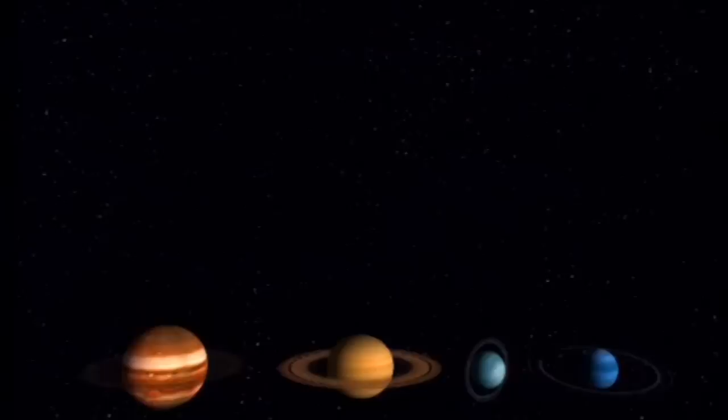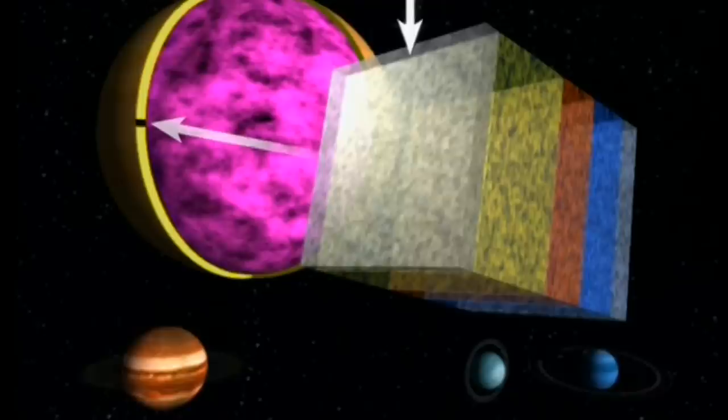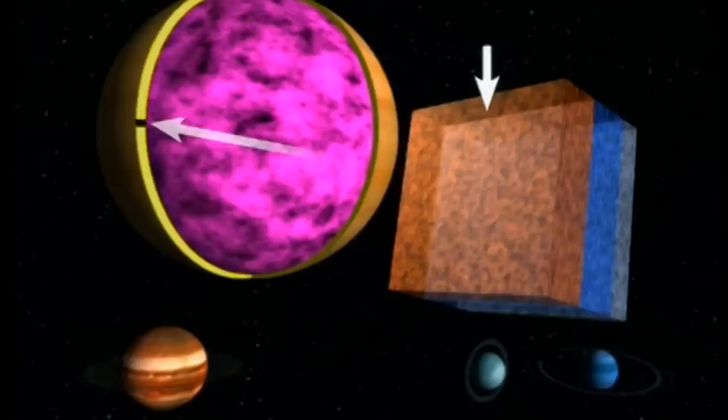L'atmosphère de Saturne se divise en cinq couches. La plus élevée d'entre elles est composée de brouillard. En dessous, des cristaux de glace ammoniaqué, puis de l'hydrosulfine d'ammonium, ensuite de la glace d'eau et enfin des gouttes d'eau.